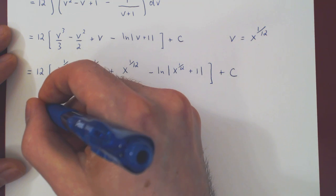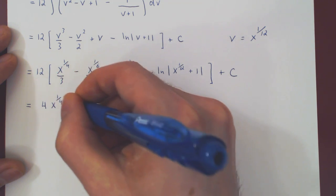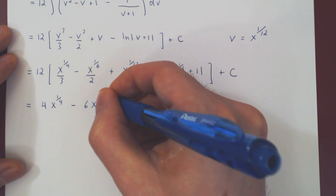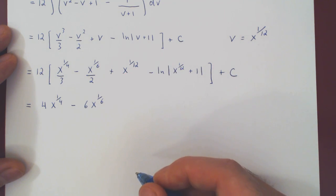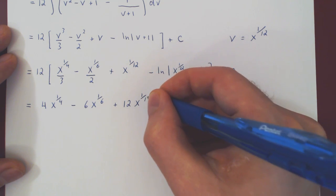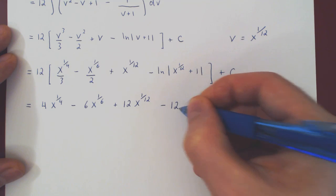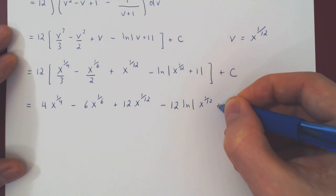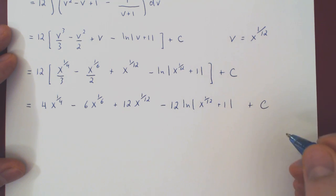4 times x to the 1 over 4 minus 6 times x to the 1 over 6 plus 12 times x to the 1 over 12 minus, finally, 12 times the ln of x to the 1 over 12 plus 1 in absolute value plus of course c.